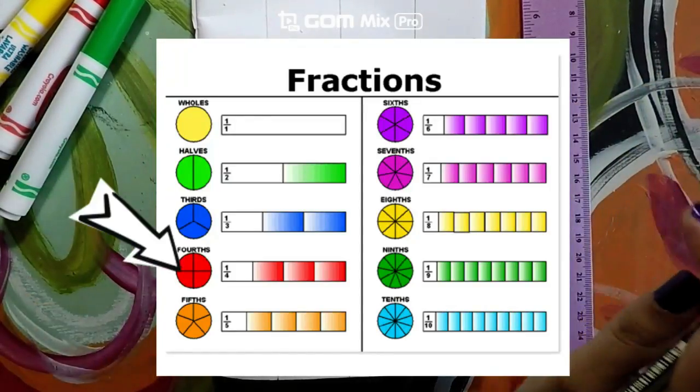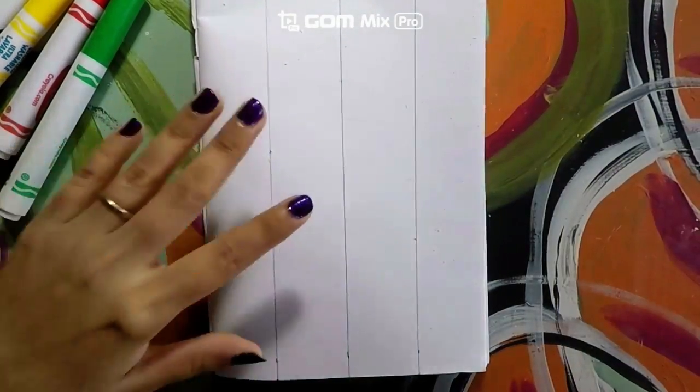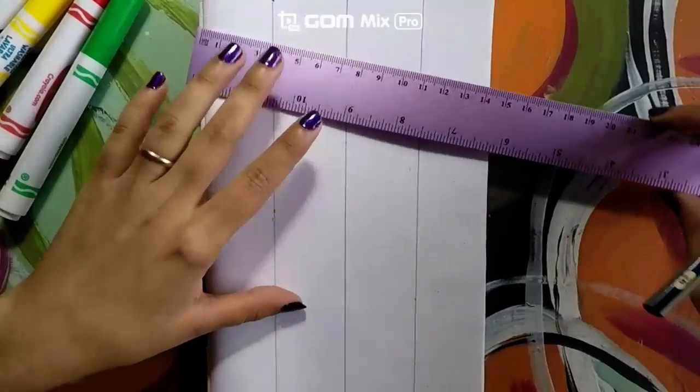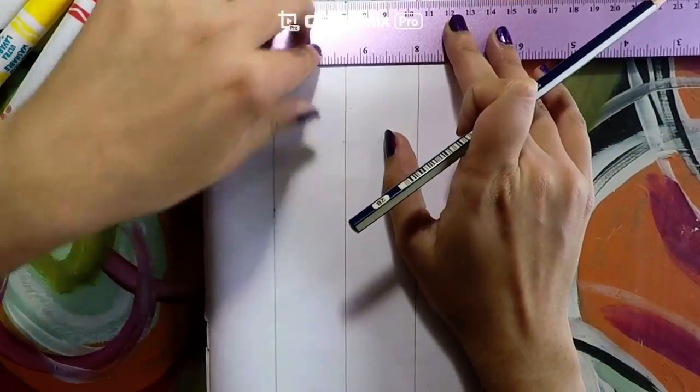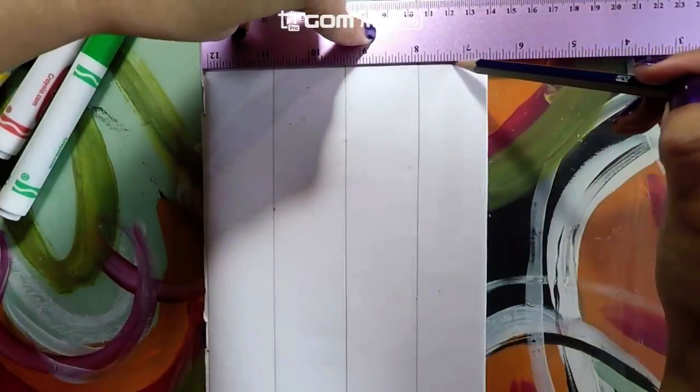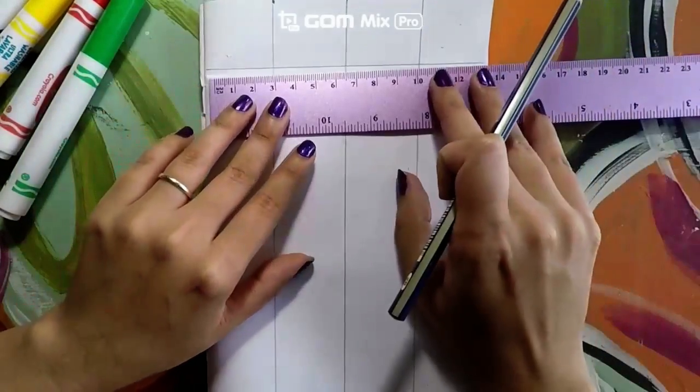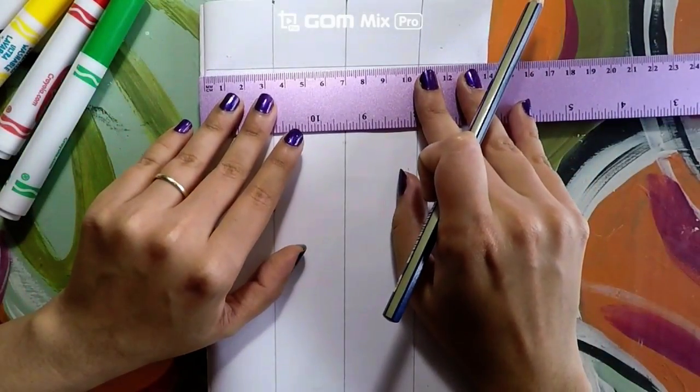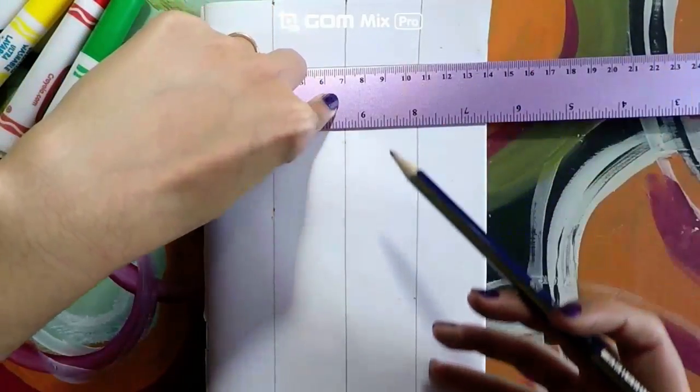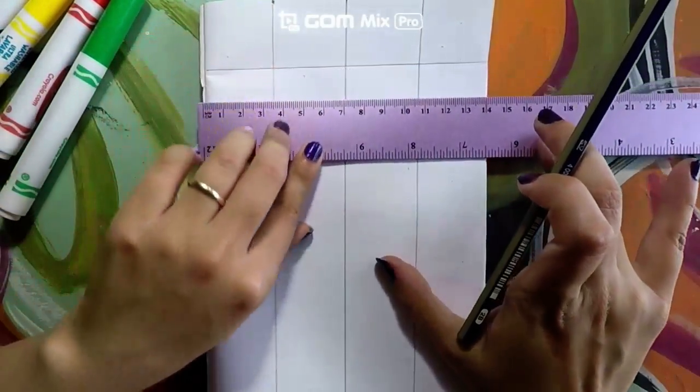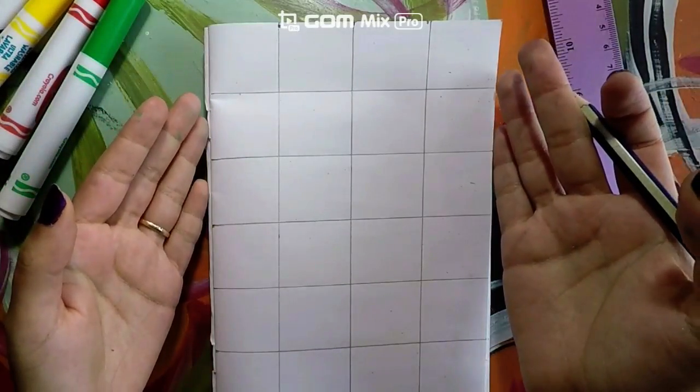Now what I will do is I will go ahead and grab my ruler. And I'm actually going to place it at the top and create a line at the bottom. Just like this. And I will do the same thing again. I will align it and create a line. And I will do that all the way until I reach the end of the page. Now I have finished.